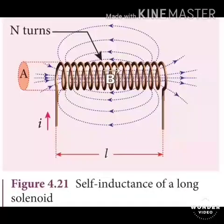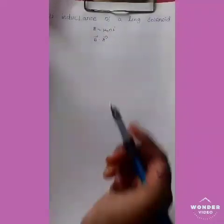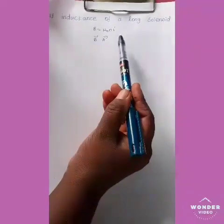Let us consider a long solenoid of length L and cross-sectional area A. Let N be the number of turns per unit length — this is called the turn density of the solenoid. When an electric current I passes through the solenoid, a magnetic field is produced by the coil. The magnetic field is almost uniform and directed along the axis of the solenoid.